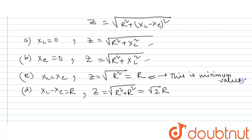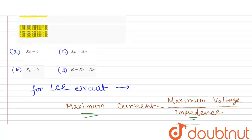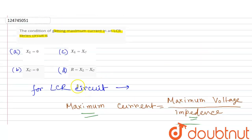So we know that when XL equals XC, the impedance is R, which is the minimum value. This is the impedance of the resistance of the system — it is actually the resonance condition. The minimum impedance gives the maximum current value.